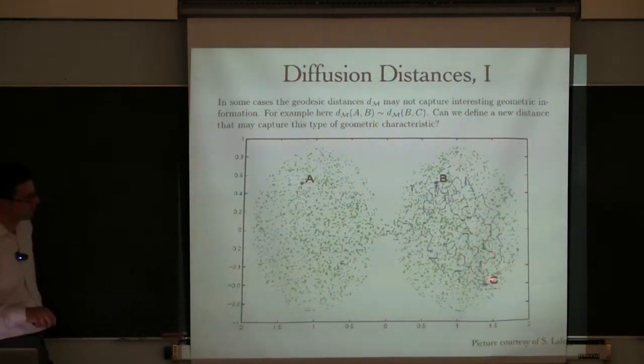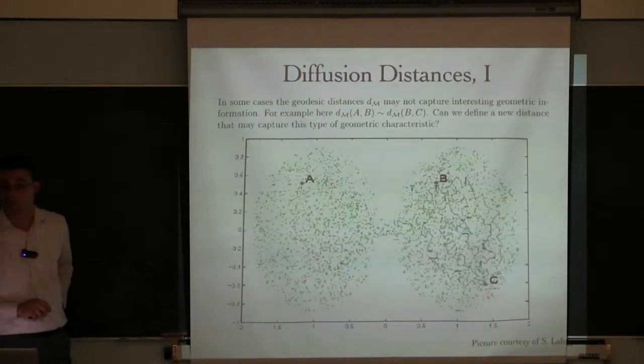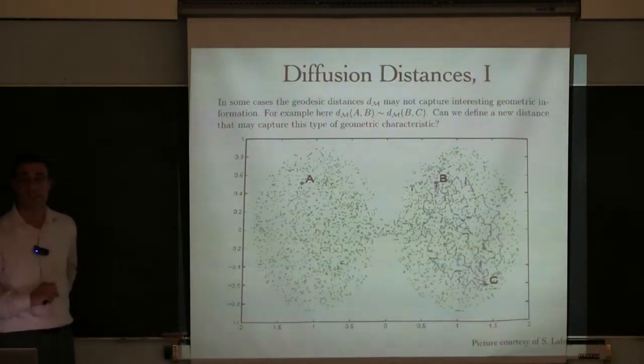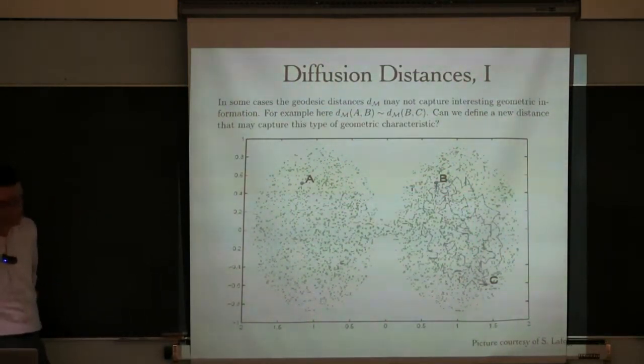On the other hand, if you start random walkers from B and from C, they're going to meet very often, pretty soon. So it turns out that this sort of meeting of random walkers starting from different points is exactly what this map is encoding.